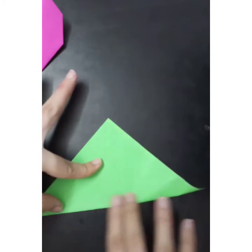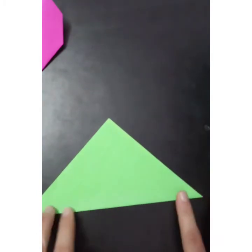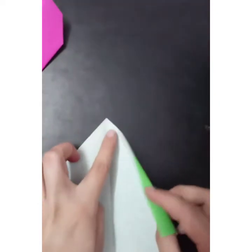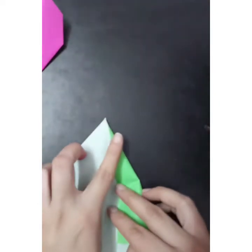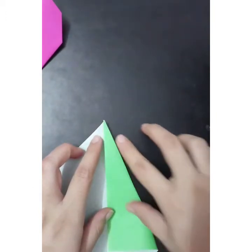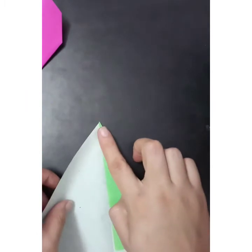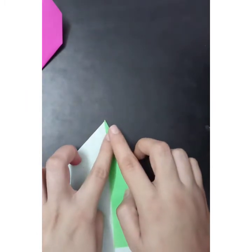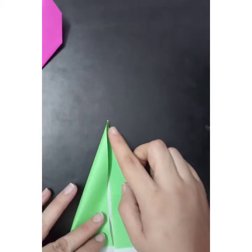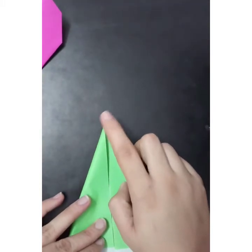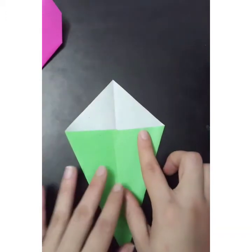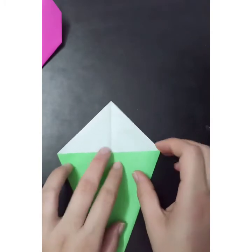Fold the sheet opposite side and open it, and one more time you have to fold it inside. Then from the upper side you have to fold it like this.